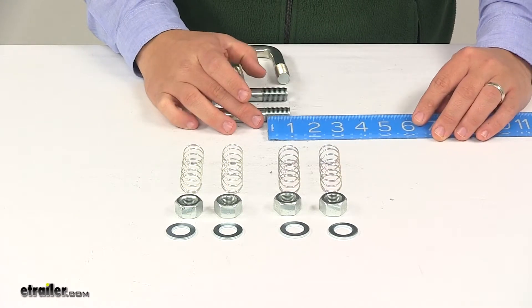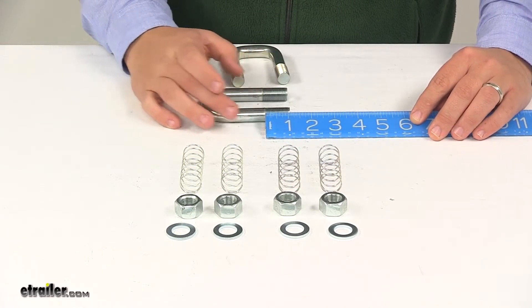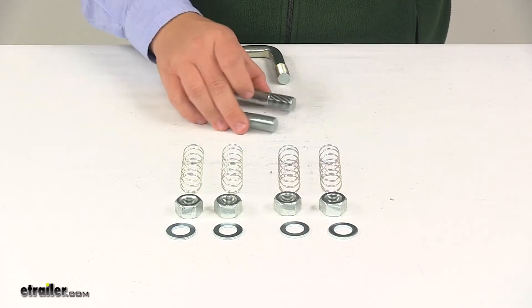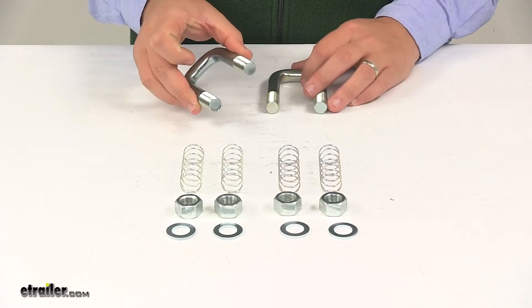The threaded portion measures about one and one-sixteenth of an inch to one and one-eighth of an inch. And the diameter of each one is about nine-sixteenths to five-eighths of an inch.